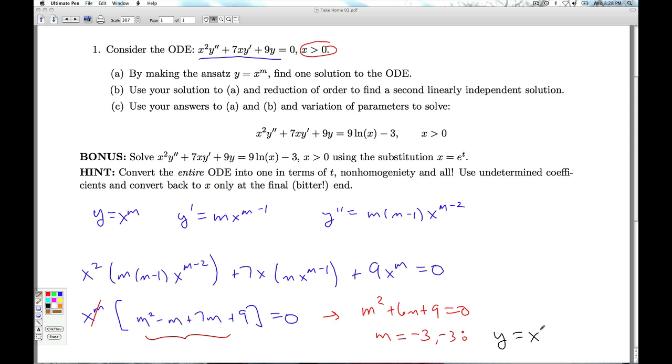I get y equals x to the minus 3rd. Now I know that in order to solve a second order linear differential equation, I need two linearly independent solutions. This technique only gave me 1. Well, now that I have 1, I can go back and do a reduction of order to find a second one. And so that's what we're going to do now.